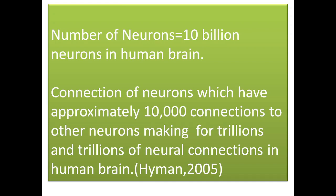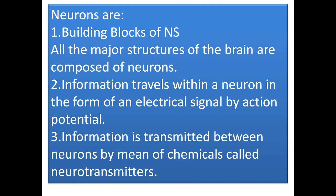What is the actual number of neurons in the brain? It is estimated that there are approximately 10 billion neurons in the human brain, and each neuron has approximately 10,000 connections to other neurons, making for trillions and trillions of neural connections in the human brain. This was concluded in the study of Hyman 2005. Neurons are known as the building blocks of the nervous system, and all the major structures of the brain are composed of neurons.